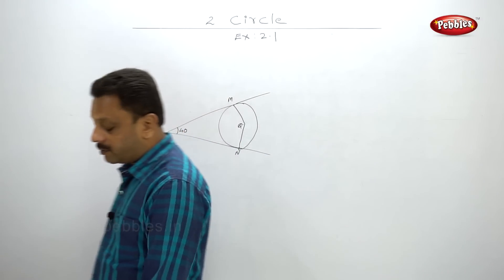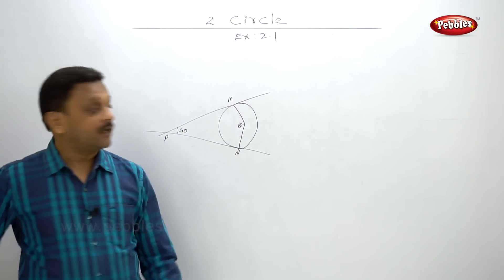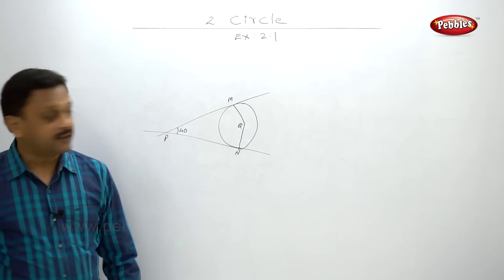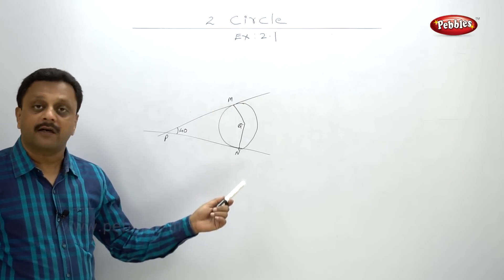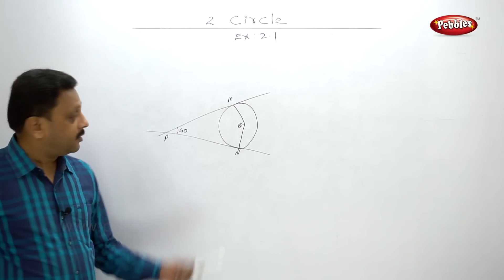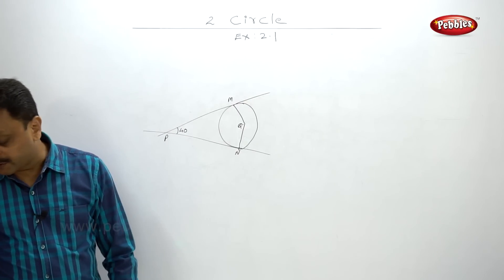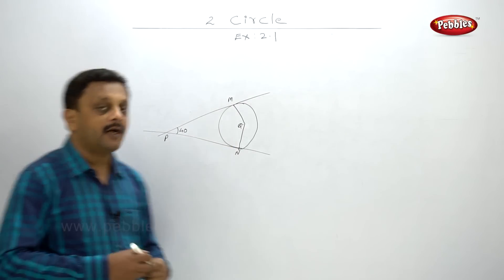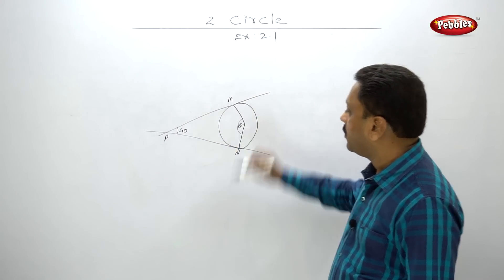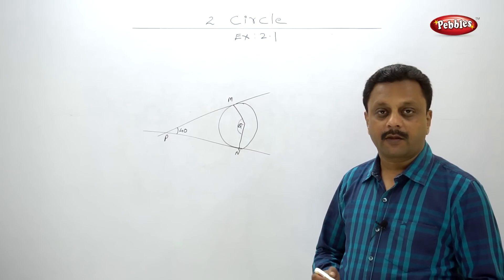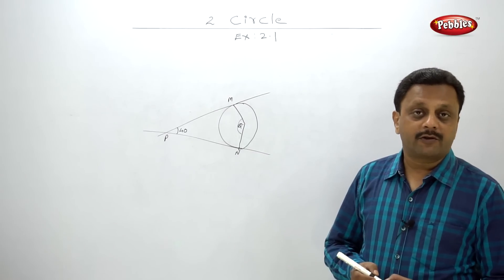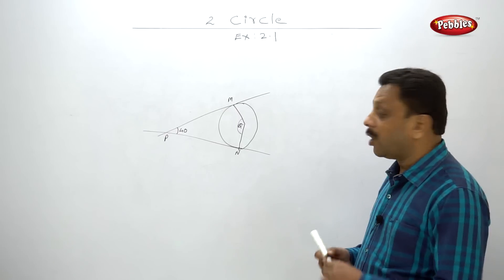In this figure, Q is the center of the circle. PM and PN are tangent segments to the circle. If angle MPN is 40 degrees, find angle MQN. Very easy — first let us understand this figure.